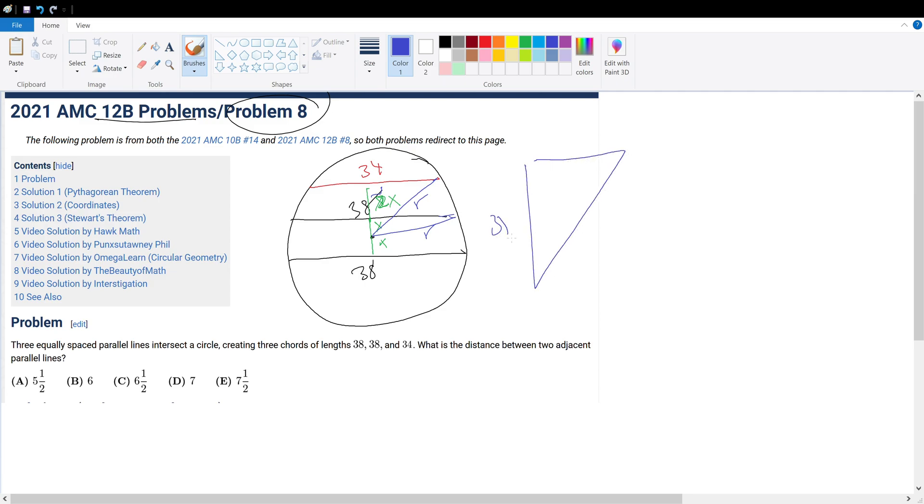So the big triangle is 2x plus x, or 3x, this bisects, so that would be 17, or 34 divided by 2, and we have another right triangle, a smaller one, that's just x, and then 38 divided by 2, or 19, and then we have r, and that's the right triangle.